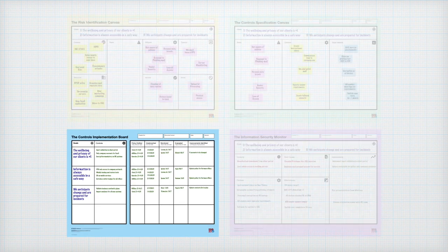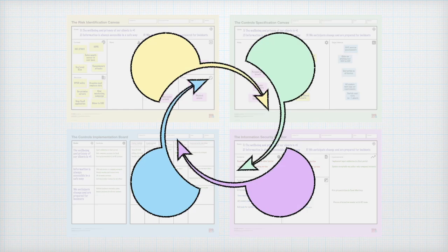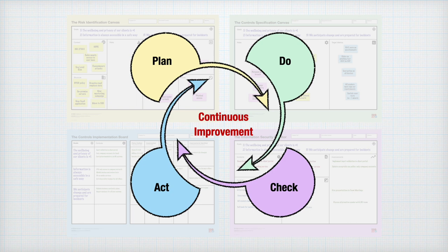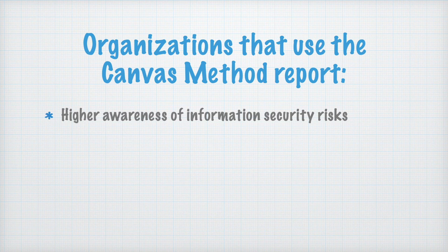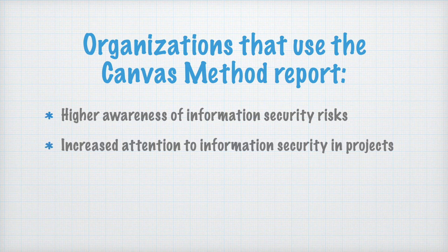The Canvas method for Information Security implements a plan-do-check-act cycle for continuous improvement of your Information Security. Organizations that use the Canvas method report a higher awareness of Information Security risks, increased attention to Information Security in projects and decision-making, and a better grip on Cybersecurity Risk Management.